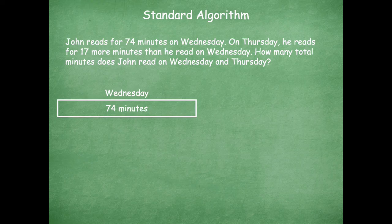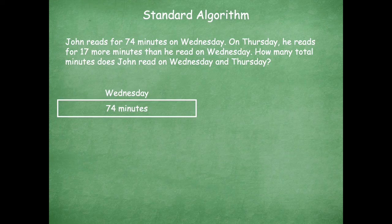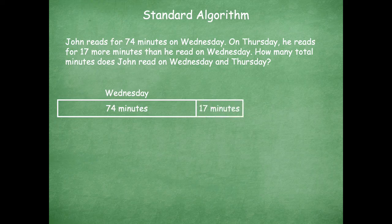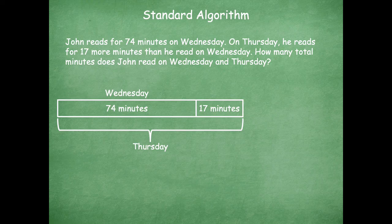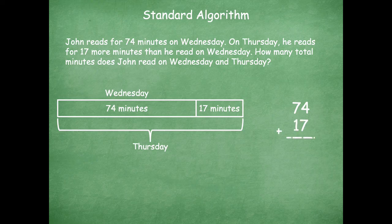So I want to go through and draw a tape diagram and label what I already know. I know that John reads for 74 minutes on Wednesday. Then if I look back to my problem, it says on Thursday, he reads for 17 more minutes than he read on Wednesday. So they're not telling me how many minutes he read on Thursday, so we have to solve for that. I know that he read 74 minutes, but he read 17 more minutes on Thursday. So now if I have all of that together, that's going to represent Thursday's time that he read. So now I'm going to combine those two numbers to find the sum. So we have 74 plus 17.